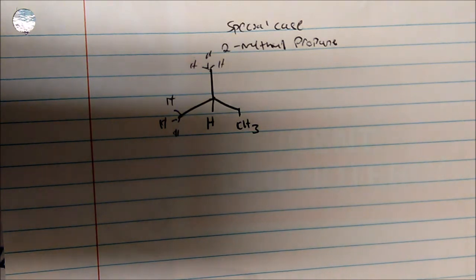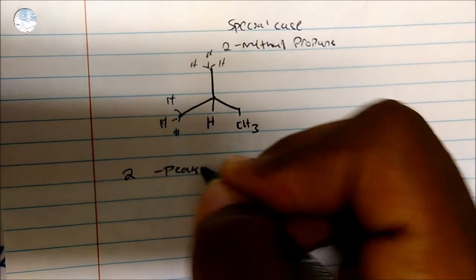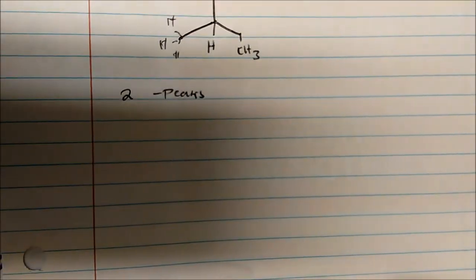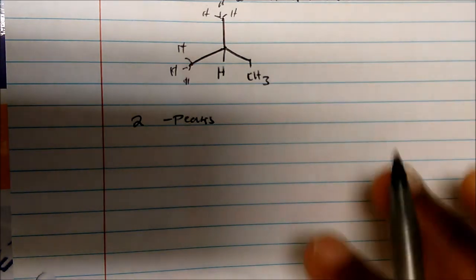Ultimately, we're only going to see two peaks. This is a special case for this molecule, but also molecules that are symmetrical. So in an exam, if you were asked to predict how many peaks you should see on the NMR spectrum, the answer would be two. Now let's look at the reason why.